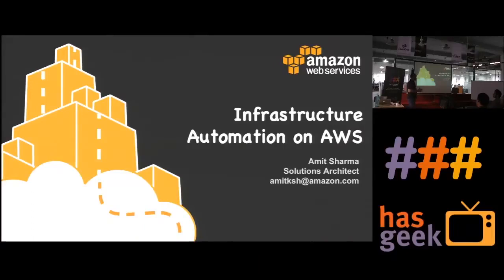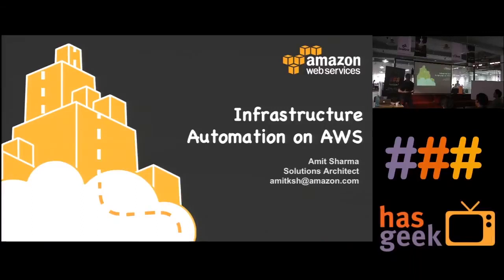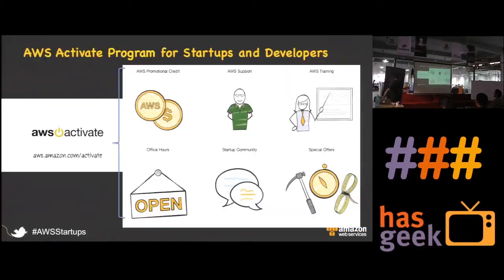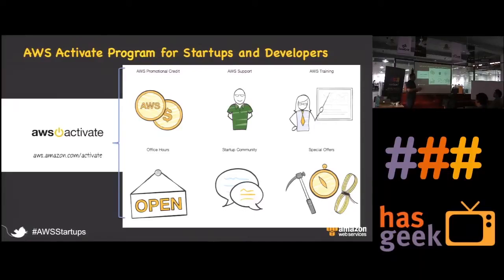I was given this agenda on Infrastructure Automation, so I am sure Jaspir also spoke about how NDTV has been using Puppet around infrastructure and application automation. My topic will be primarily around how you achieve this automation in Amazon Web Services. Before I start, there is something called an Activate Program. Please register for that — it is open for everyone. It gives you promotional credits, a 30-day trial for business support, trainings, office hours, and special offers. There is no charge for registration.